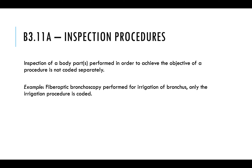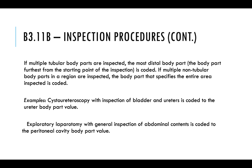Inspection procedures, guideline B3.11a: The inspection of a body part performed in order to achieve the objective of the procedure is not coded separately. Inspection root operations apply only when the physician goes to look inside a human body and nothing is cut, removed, or done except looking inside. If multiple tubular body parts are inspected, the most distal body part — the one furthest from the starting point — is coded. For example, a cystoureteroscopy with inspection of the bladder and the ureter is coded to the ureter body part value because it's the furthest place.